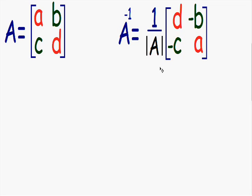This is all multiplied by another matrix. Notice these numbers in the red diagonal — they switch positions. In the original matrix, the A was in the top left position, and now it's in the bottom right position. And the D in the original matrix was in the bottom right position, and now in the inverse it's in the top left position. So the numbers in the red diagonal have to switch places.